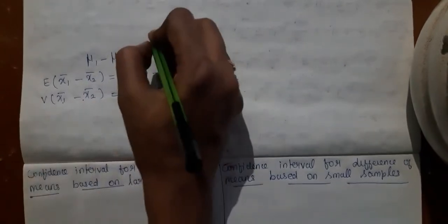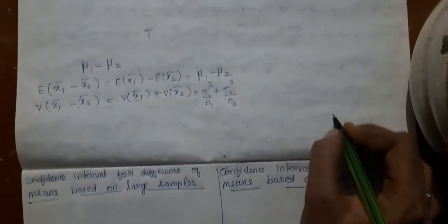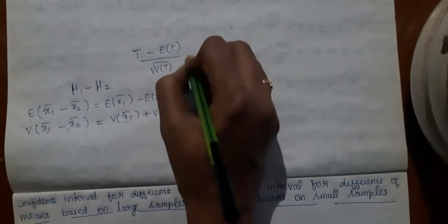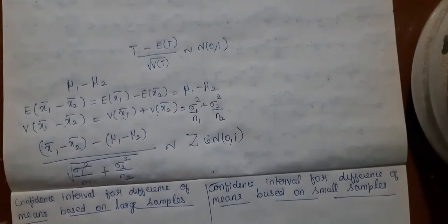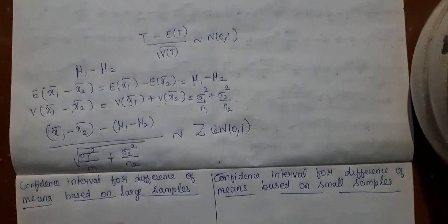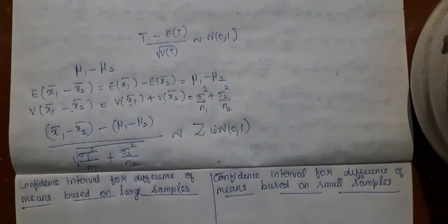If you have a statistic t and the sample size is large, then t minus expectation of t divided by square root of variance of t follows standard normal distribution. On the same logic, x̄₁ minus x̄₂ minus (mu1 minus mu2), divided by square root of sigma1²/n1 plus sigma2²/n2, follows standard normal distribution — that is N(0,1). This is the clue and the starting point for deriving the confidence interval when the sample size is large.